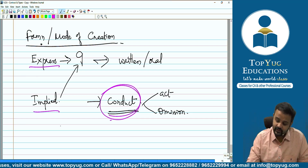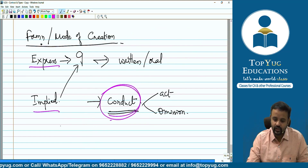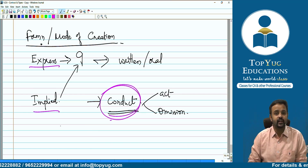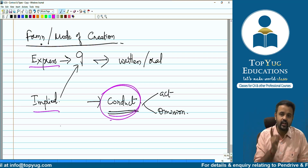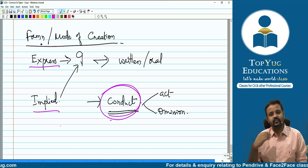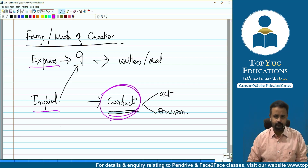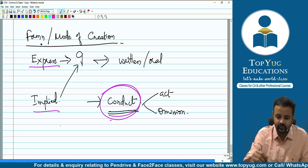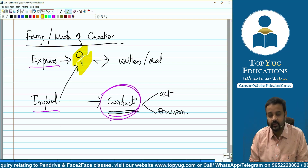The same contract can be classified under multiple categories depending on the basis used, just like the same student Naman could be placed under different categories depending on whether you classify by gender or by domicile. Express contract means written or oral. Implied contract means by conduct — act or omission. The section number to remember is Section 9, which covers both express and implied contracts.